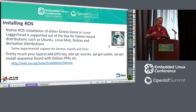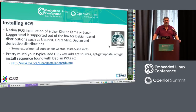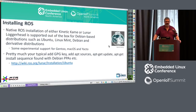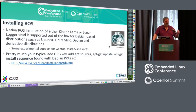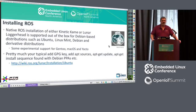Installing ROS: the latest version came out in May 2017 and is called the Lunar Loggerhead. All ROS releases are named after turtles in alphabetical order — the Kinetic Kame and the Lunar Loggerhead. If you are running a Debian distribution, you are in good shape. Debian distributions are the primary mechanism used on their website. They have Debian repos, so whether you're using Ubuntu, Linux Mint, Debian, or derivative distributions, you're good. There is some experimental support for Gentoo and macOS, and of course, Yocto.